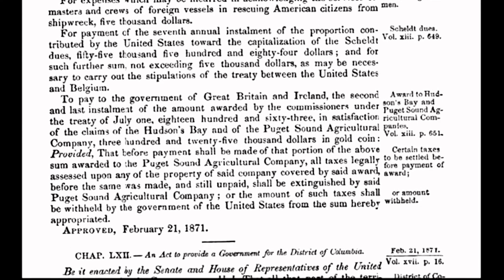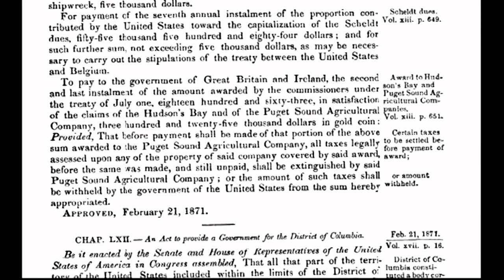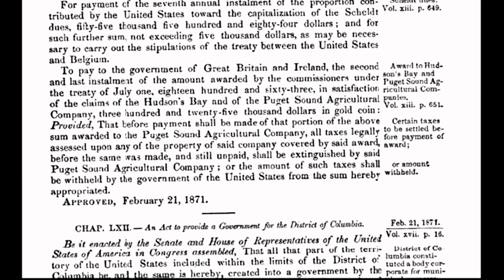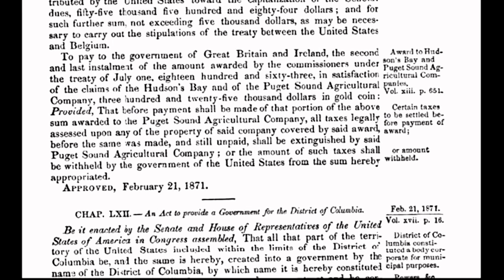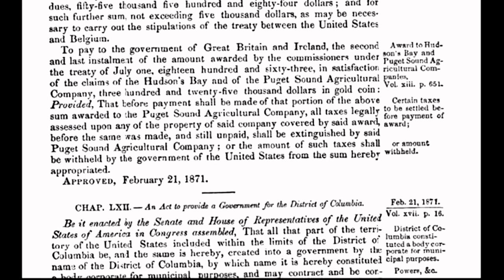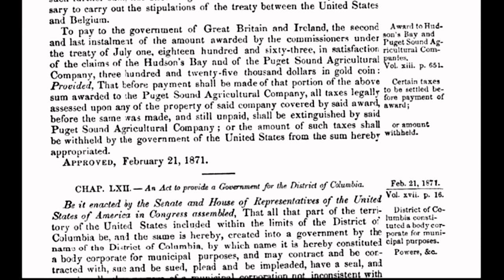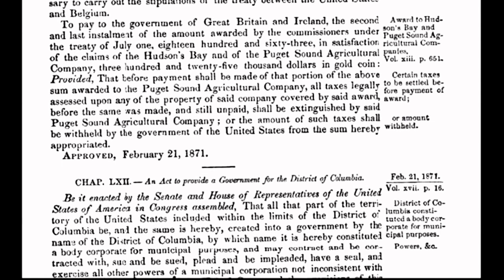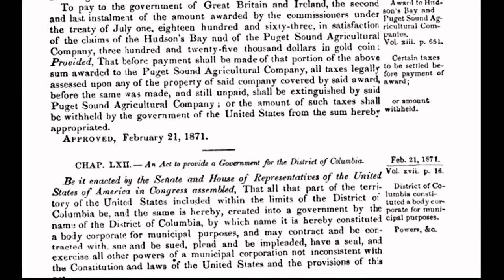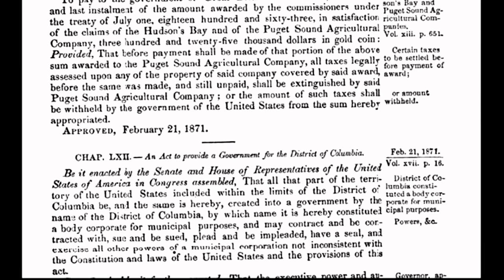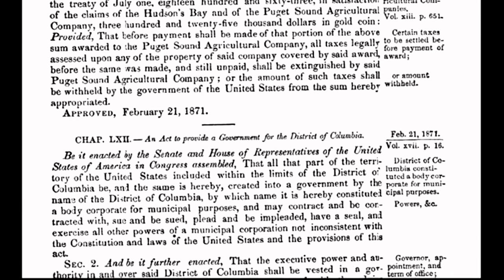With no constitutional authority to do so, Congress created a separate form of government for the District of Columbia, a 10-mile-square parcel of land. The act was passed when the country was weakened and financially depleted in the aftermath of the Civil War. It was at that time a strategic move by foreign-interest international bankers, who were intent upon gaining a stranglehold on the coffers and neck of America. Congress cut a deal with the international bankers, specifically the Rothschilds of London, to incur a debt to said bankers.